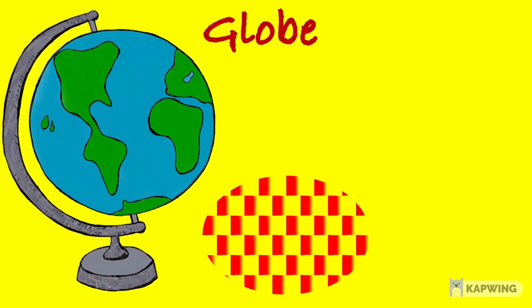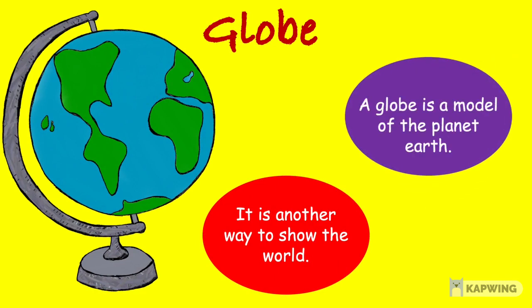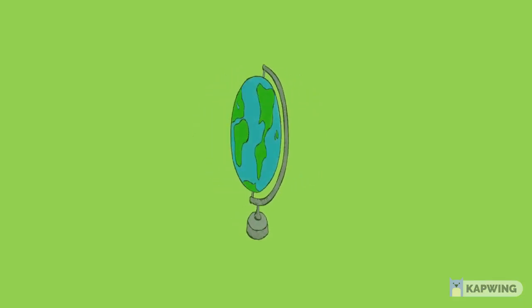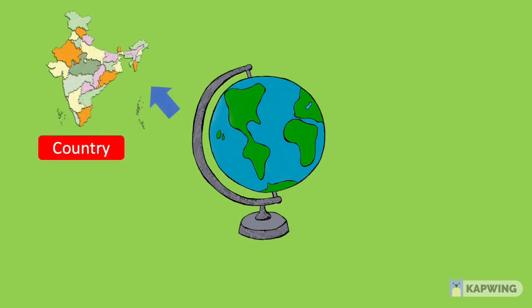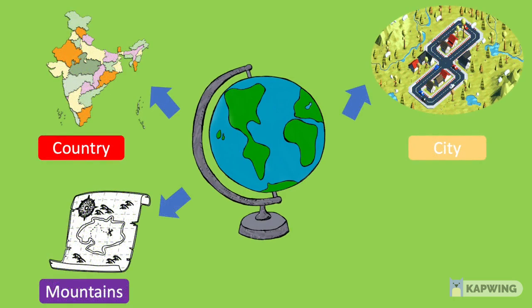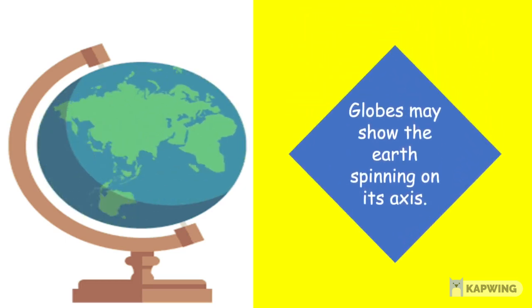So kids, like maps, a globe is another way to show the world. A globe is a model of the planet Earth. Globes of the Earth can also show countries, cities, mountains and rivers. Globes also show the Earth spinning on its axis.